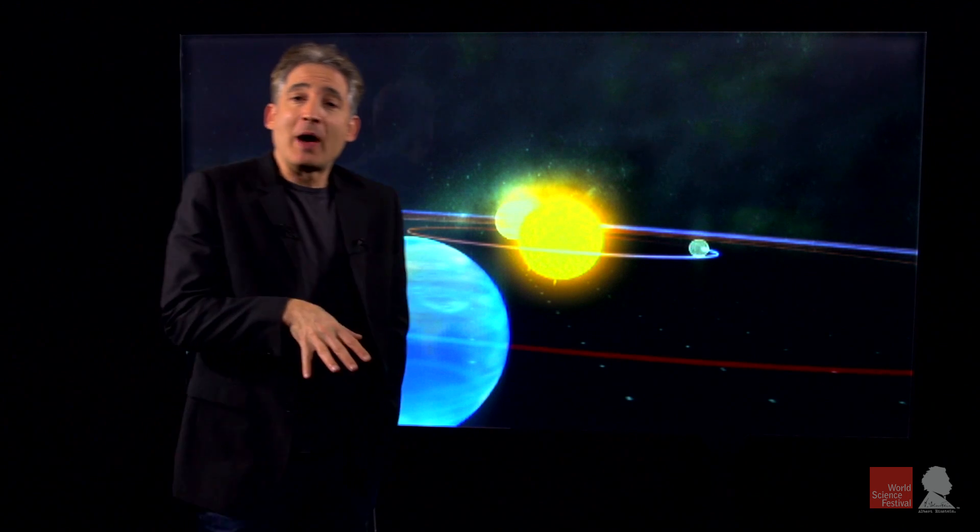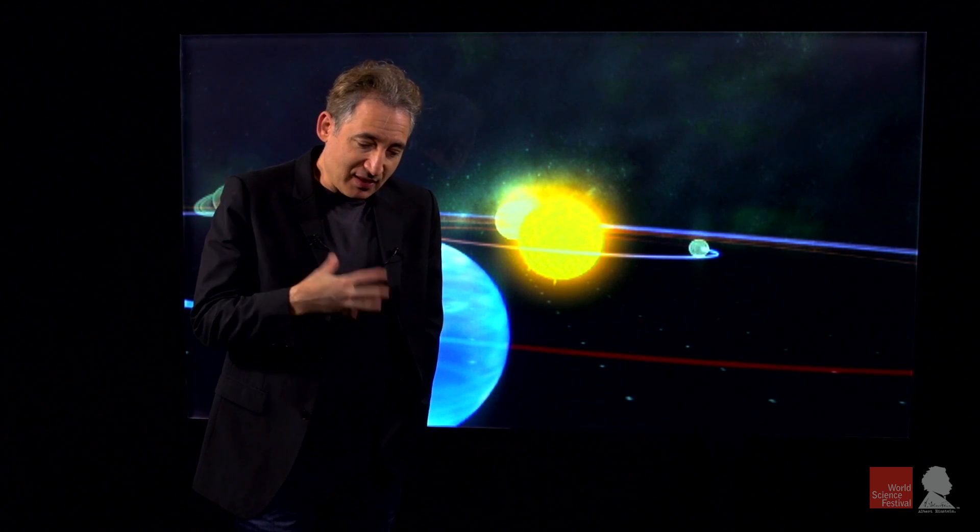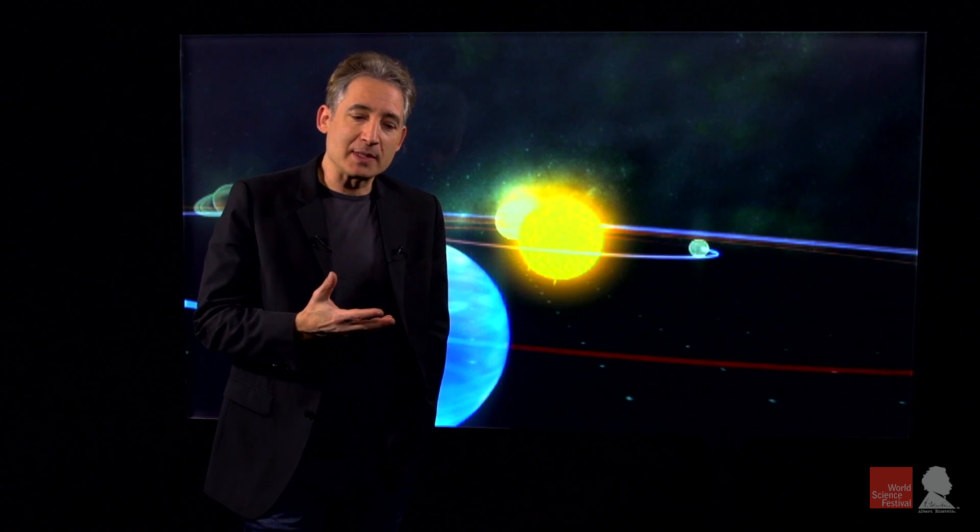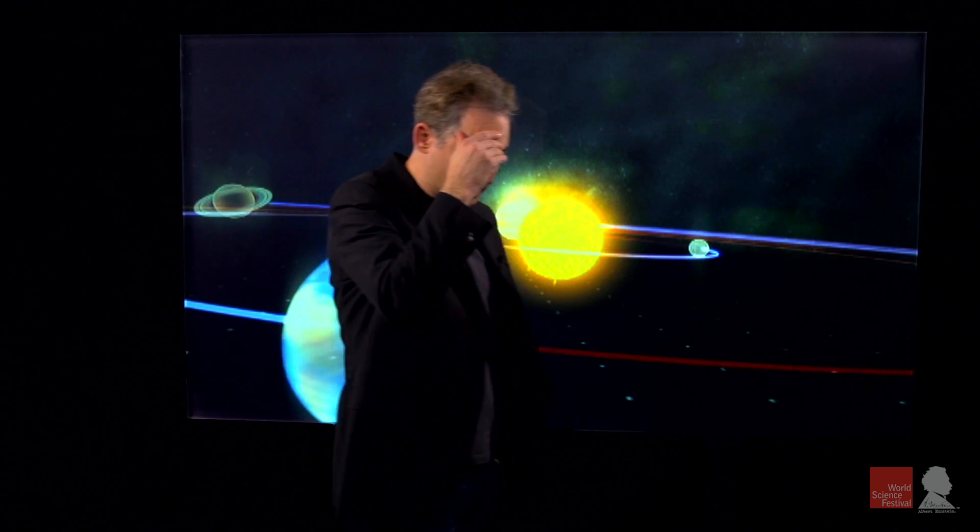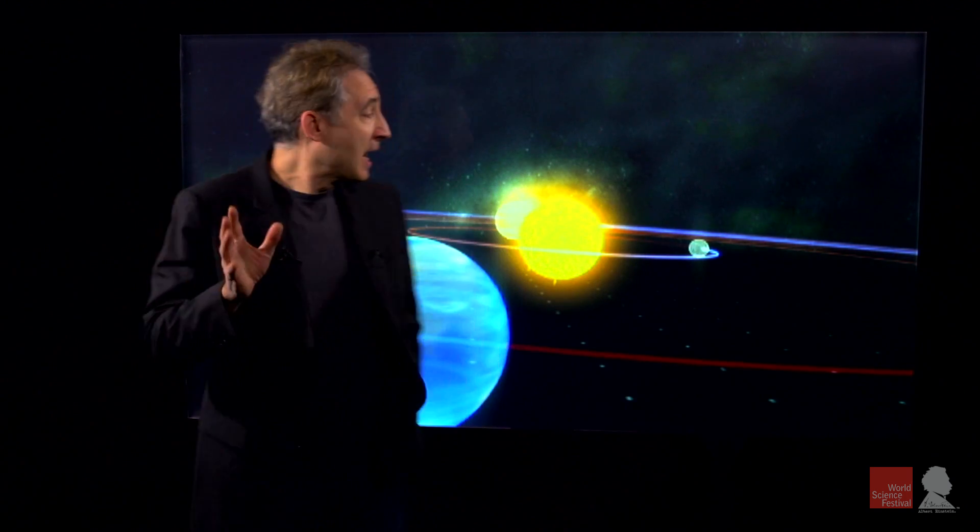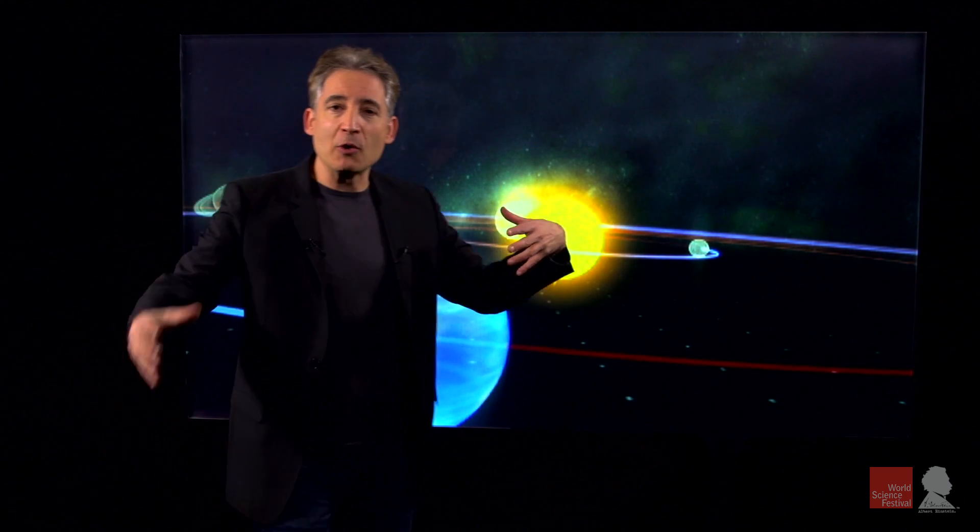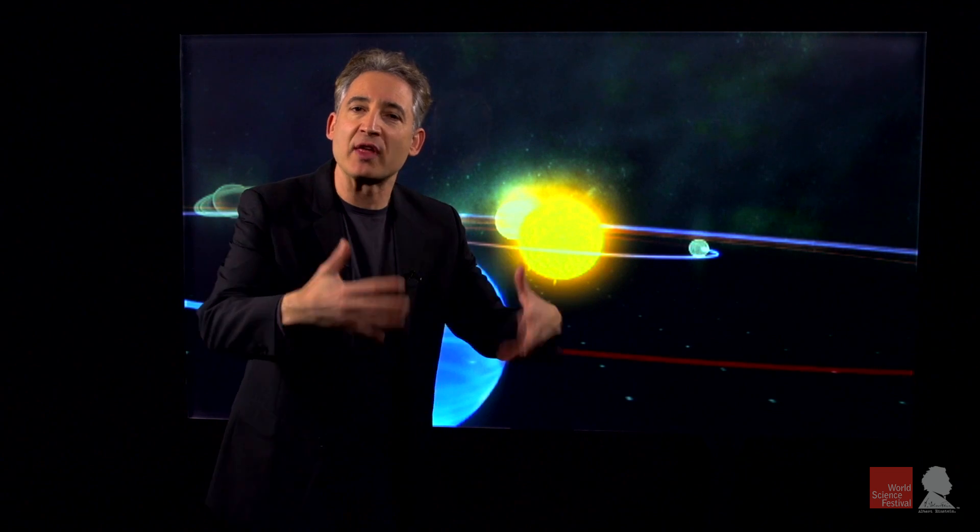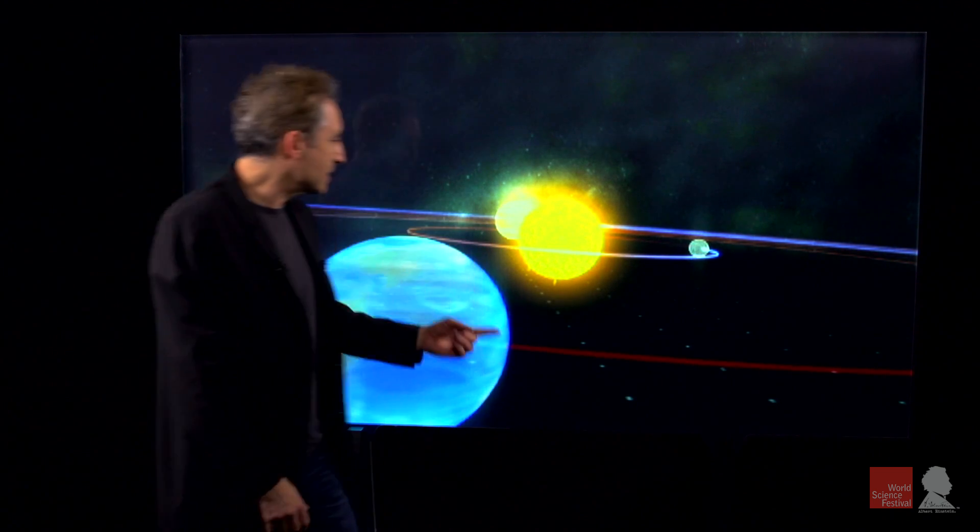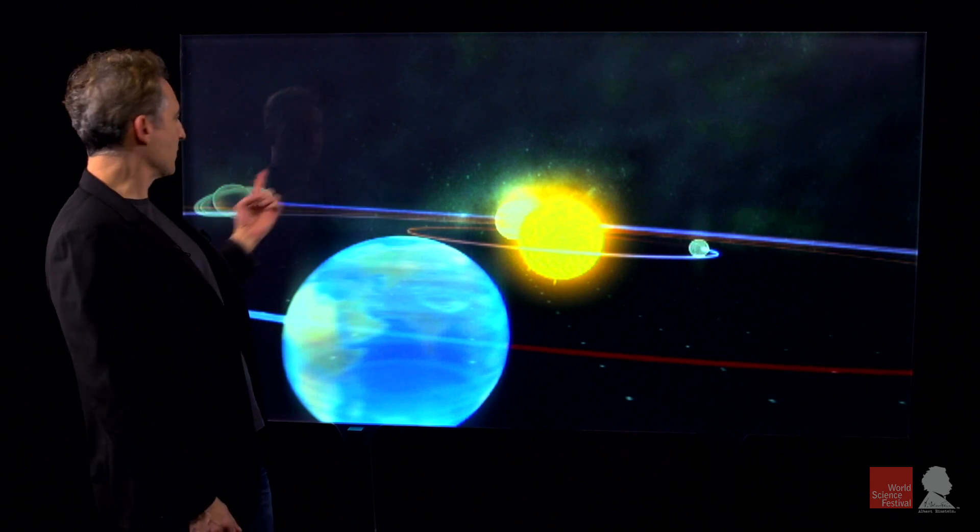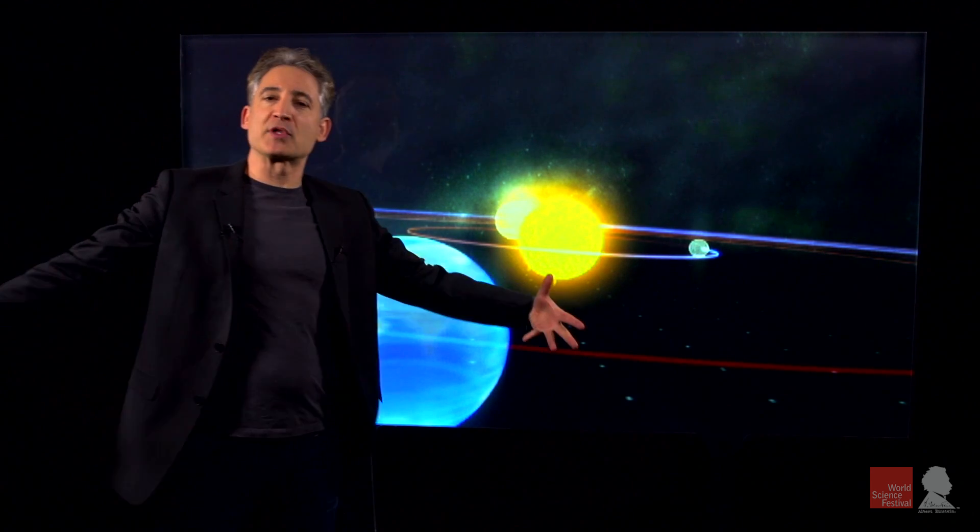But even so, Einstein, when he started to think about these ideas, was left unsatisfied by Newton's ideas of gravity for a number of reasons. But one concrete one that's easy to grasp is Newton never told us how gravity actually exerts the influence that we associate with it. How is it that the sun pulls on the earth or pulls on Saturn? We say it's the force of gravity.